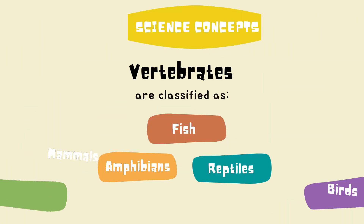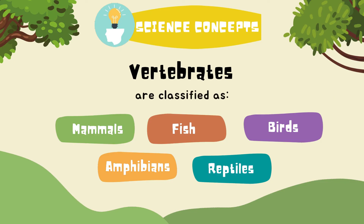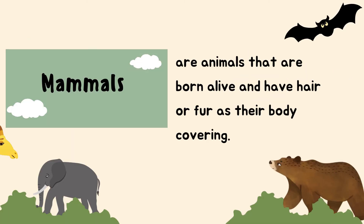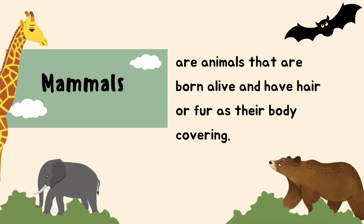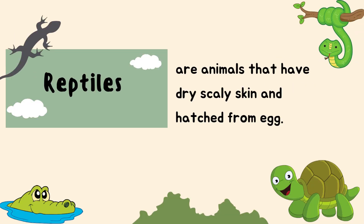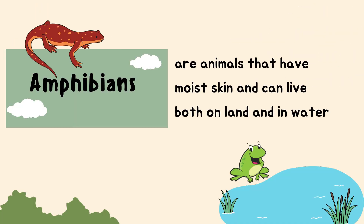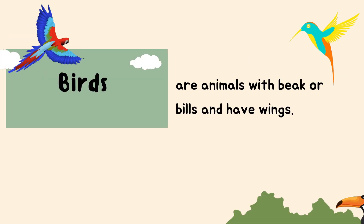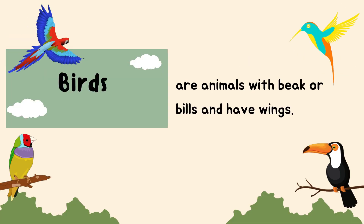Now, let us wrap up all the science concepts that we have learned today. Vertebrates are classified as mammals, fish, birds, amphibians, and reptiles. Mammals are animals that are born alive and have hair or fur as their body covering. Fish are animals that have scales, fins, and gills, and live in water. Reptiles are animals that have dry, scaly skin and hatch from egg. Amphibians are animals that have moist skin and can live both on land and in water. Birds are animals with a beak or bill and have wings.